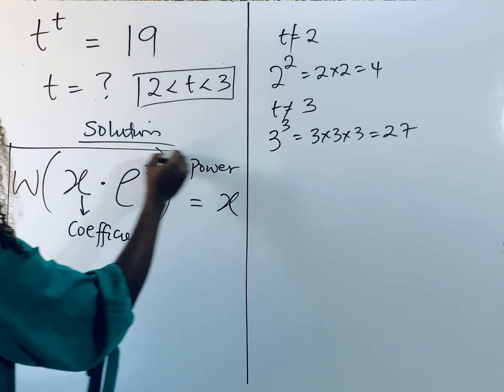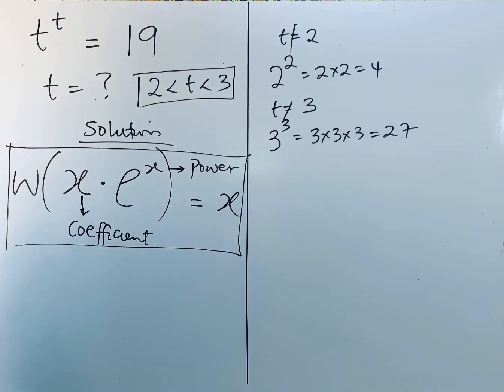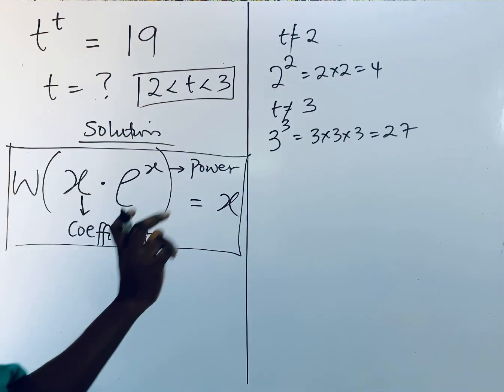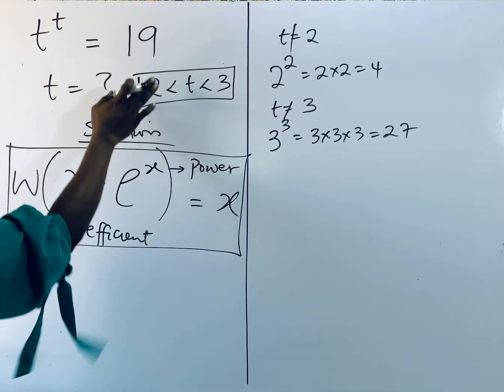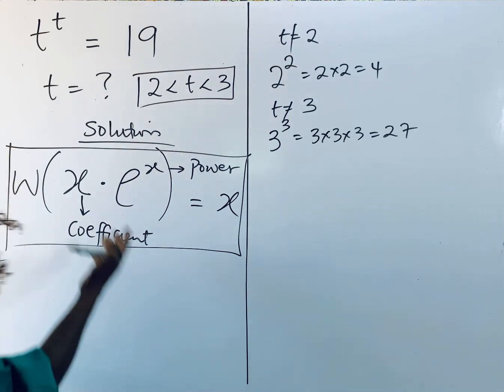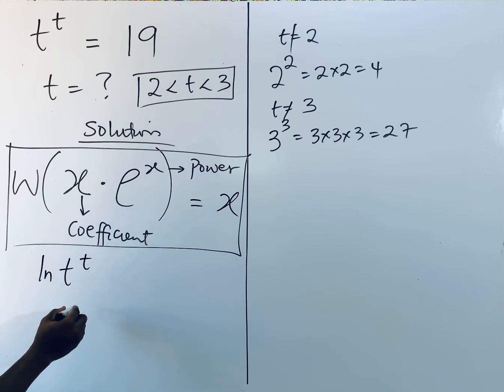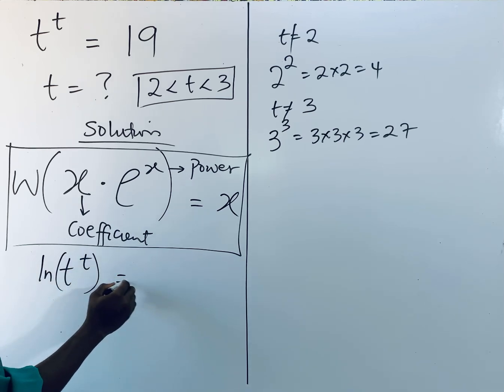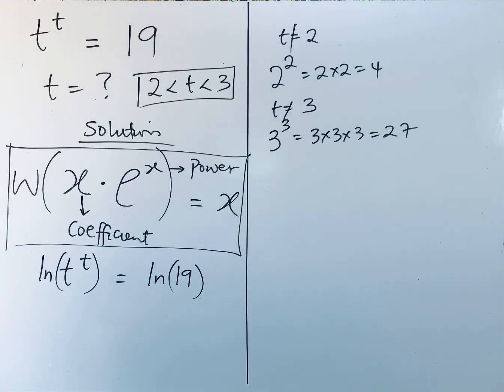So how do we apply this Lambert W function in solving this? Let me teach you what to do. We're going to take the ln of both sides. Remember your ln is just your natural log. So we're going to have ln of t to the power of t equals ln of 19. We are taking the ln of both sides.